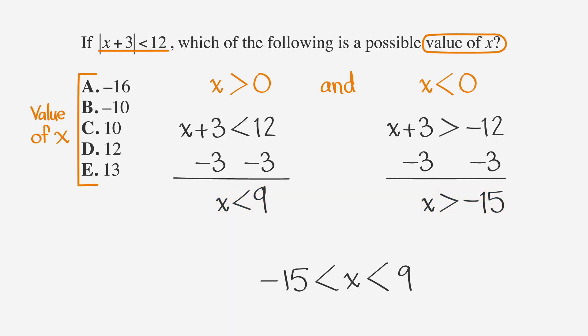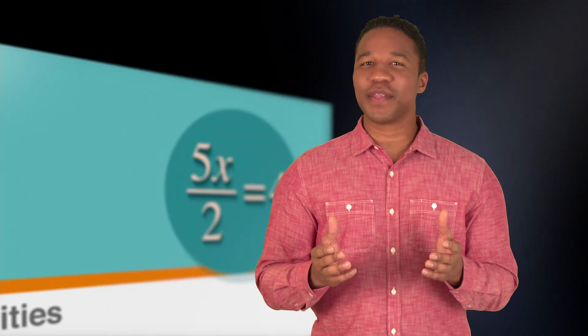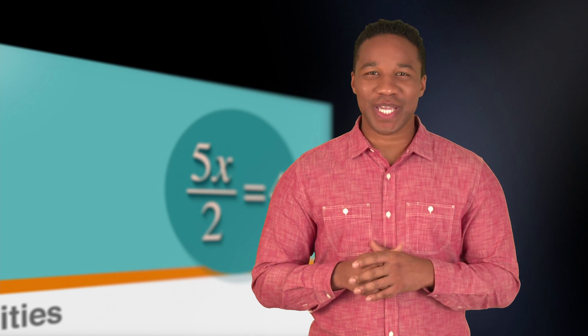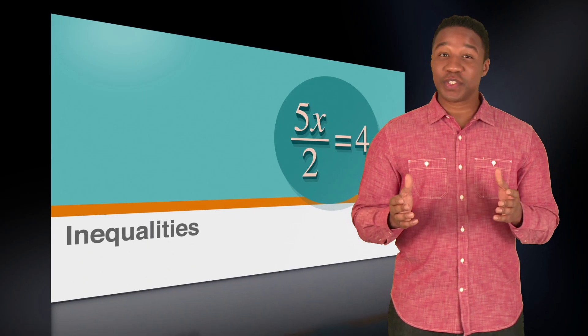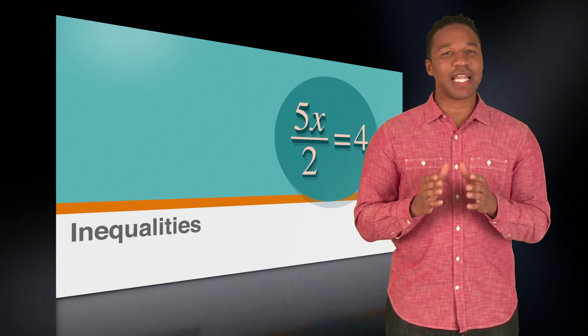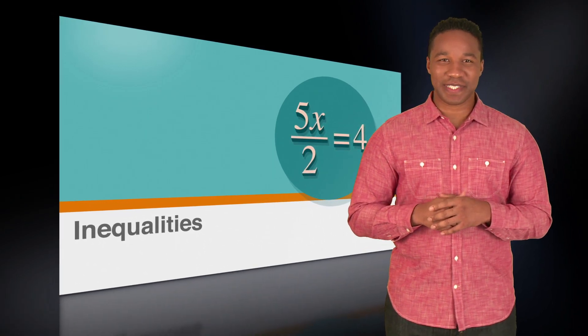This means we're looking for an answer between negative 15 and 9. The only answer that fits that bill is B, negative 10. Remember, point your arrowhead in the right direction and you'll be on your way to hitting your target ACT score. Now that you've learned about inequalities, make sure you apply your knowledge by solving some practice problems.